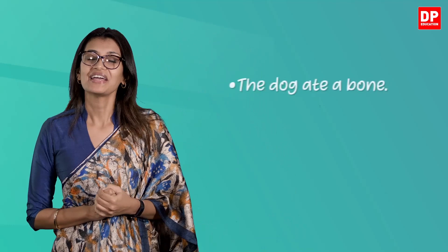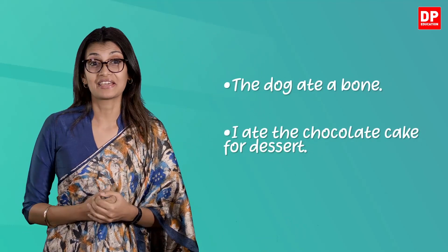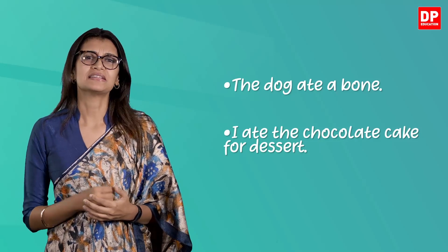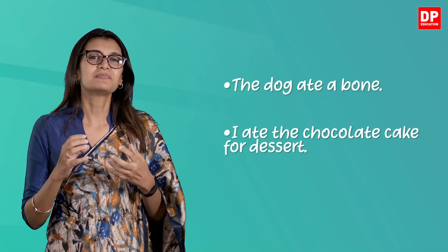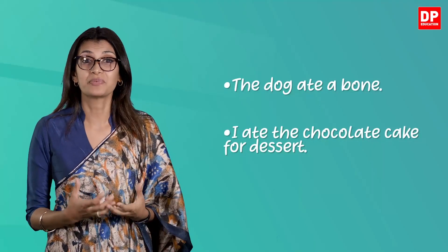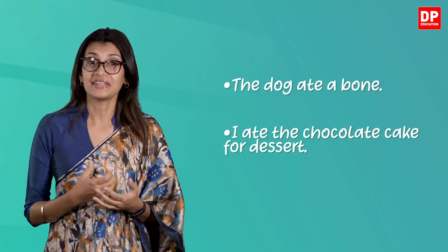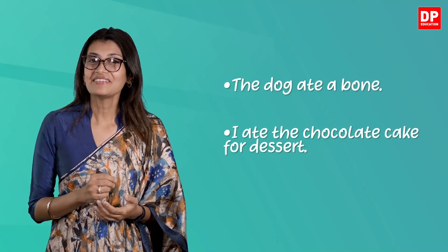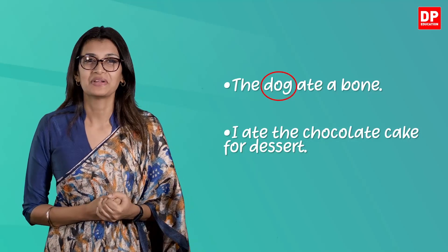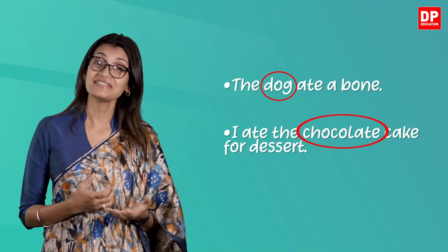The dog ate a bone. I ate the chocolate cake for dessert. In every example, the determiner is placed before the noun or noun phrase regardless of whether the noun is in the subject or predicate. In the first example, it comes directly before the noun, but in the second example, it comes before the adjective.